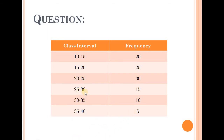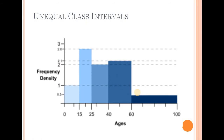For equal class intervals: 10 to 15, 15 to 20, 20 to 25, 25 to 30, 30 to 35 — class interval is equal. This is the x-axis, this is the y-axis. For unequal class intervals: 0 to 15 (class interval 15), 15 to 25 (interval 10), 25 to 40 (interval 15), 40 to 60 (interval 20) — class intervals are changing, that means unequal class intervals. There are two types: equal and unequal class interval.